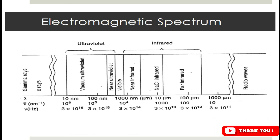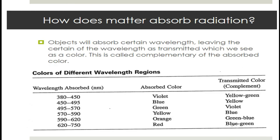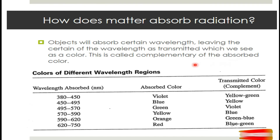Radio waves are at the higher wavelength end of the electromagnetic spectrum, so they have the lowest energy. How does matter absorb radiation? Objects absorb certain wavelengths, leaving other wavelengths as transmitted — what we see as color. This transmitted color is called the complementary color of the absorbed color.